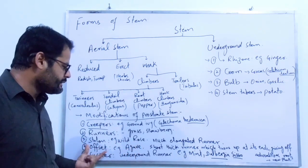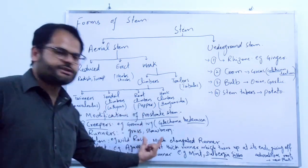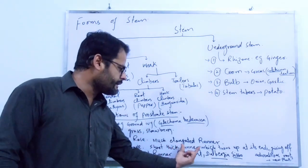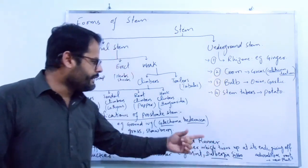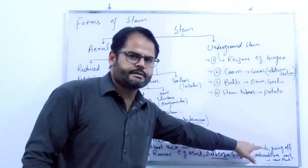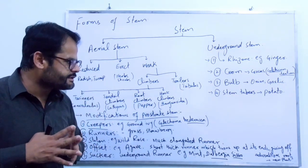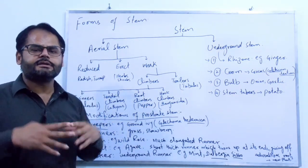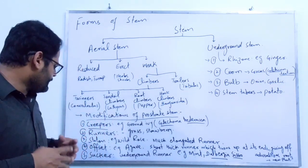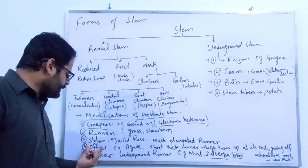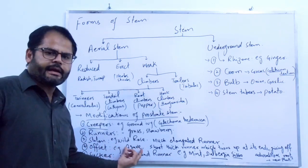The fourth type is called offset. Offset is basically a short thick runner which roots at its end and gives off adventitious roots, developing into a new plant. The familiar example of offset is Agave.